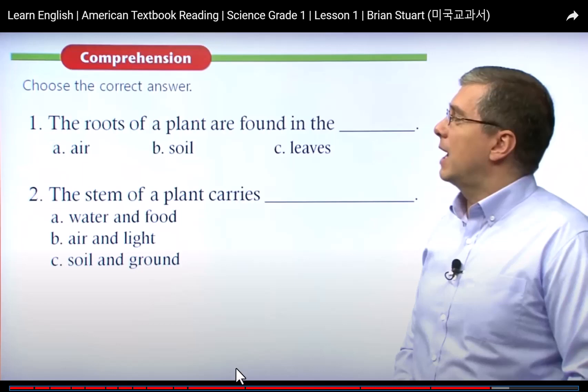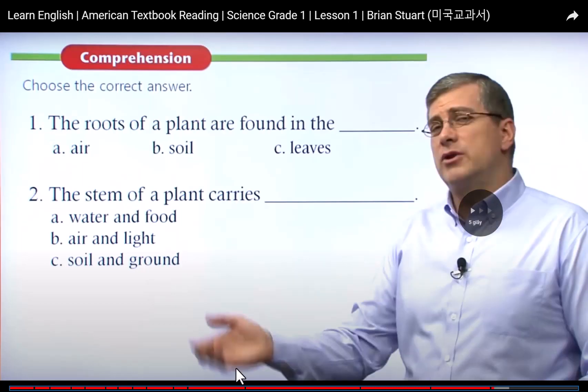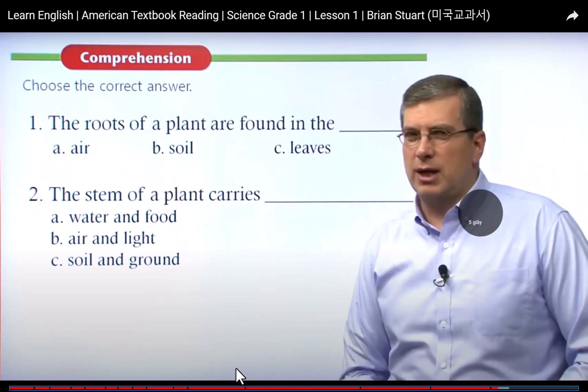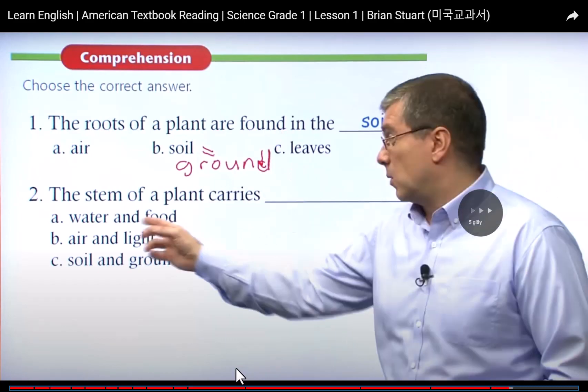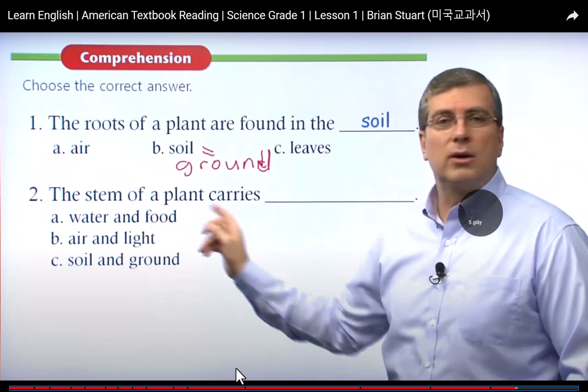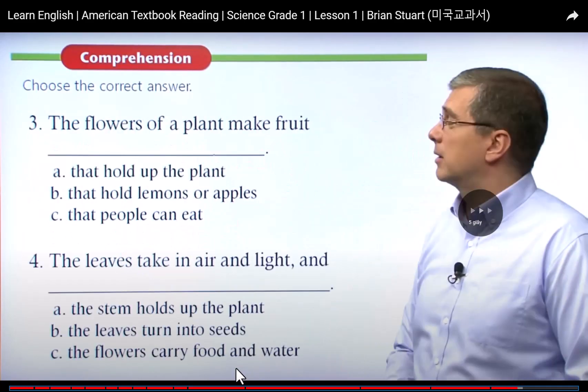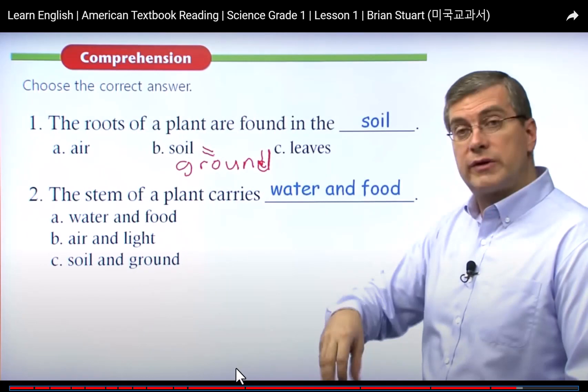The stem of a plant carries: A, water and food; B, air and light; D, soil and ground. Let's check the answers — yes, that's right, it's water and food.